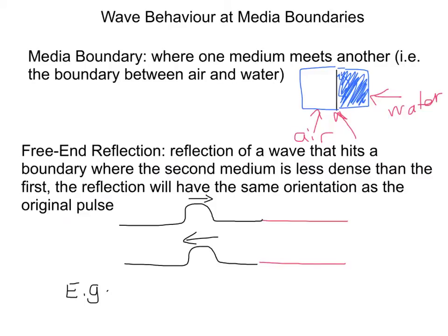I've drawn an example here. We've got a wave going that way, and it hits the boundary here at a free end. Because it's a free end, it will reflect in the opposite direction, but it's on the same side of the medium. In this case, it's still above.